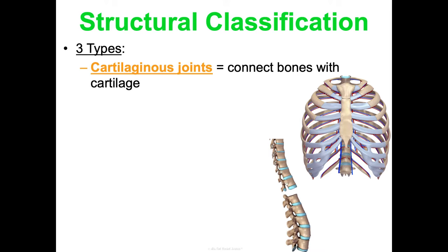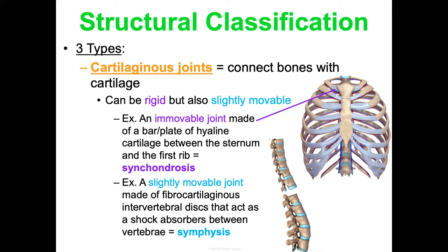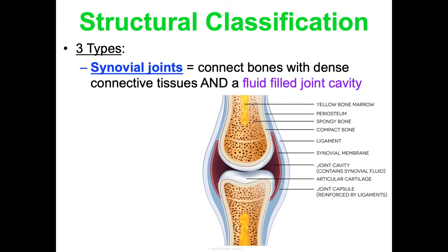Cartilaginous joints connect bones with cartilage and can be rigid but slightly movable. A totally immovable example is the joint between the sternum and the first rib, where a plate of hyaline cartilage connects them — this is called a synchondrosis. A slightly movable cartilaginous joint involves the fibrocartilaginous intervertebral discs between vertebrae, which act as shock absorbers; that joint is called a symphysis. Another symphysis is found in the pubic arch.